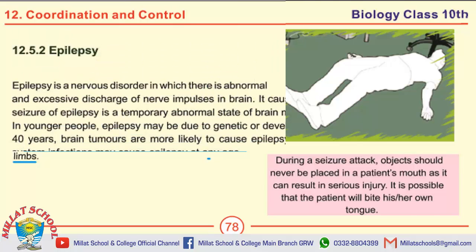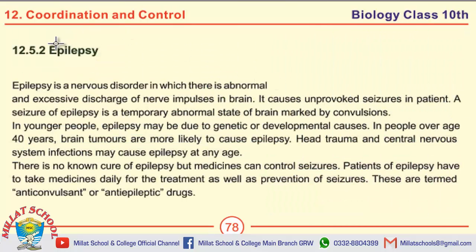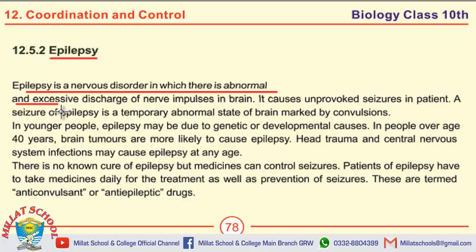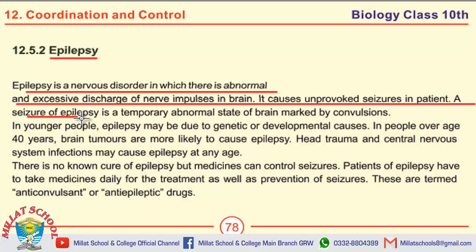The last nervous disorder is epilepsy. Epilepsy is a nervous disorder in which there is abnormal and excessive discharge of nerve impulses in the brain. It causes unprovoked seizures in patients. A seizure of epilepsy is a temporary abnormal state of brain marked by convulsions. This is the exact definition of epilepsy.